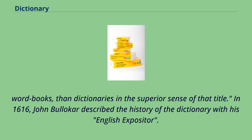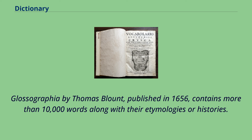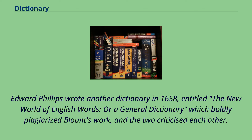Glossographia by Thomas Blount, published in 1656, contains more than 10,000 words along with their etymologies or histories. Edward Phillips wrote another dictionary in 1658 entitled The New World of English Words, or a General Dictionary, which boldly plagiarized Blount's work, and the two criticized each other. This created more interest in dictionaries.